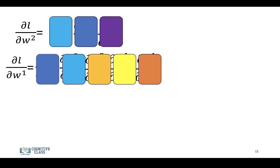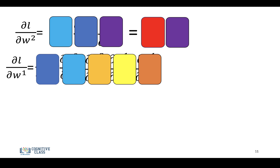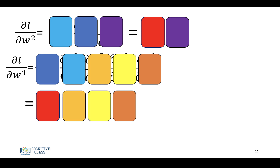What backpropagation does is it uses the derivative of the first parameter in the output layer to help us calculate the parameter on the next layer — and that's all it is. Here are the two equations. We're not interested in the actual equations; we're just trying to understand the concept, so we'll color them accordingly. As you can see, these two blue terms are present in both the output layer and in the hidden layer. So let's replace the two blue terms with this red term, and we get a computational savings.